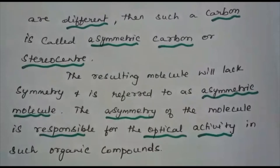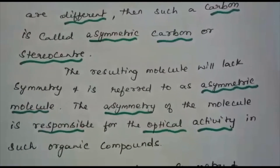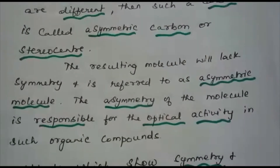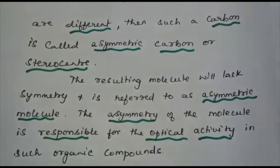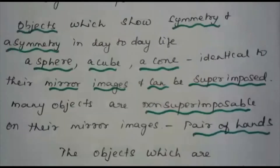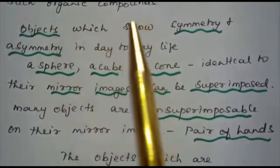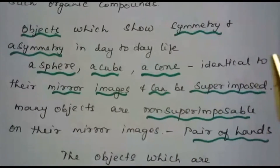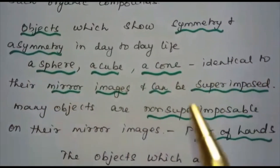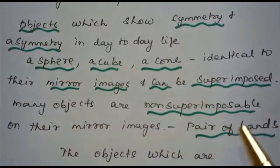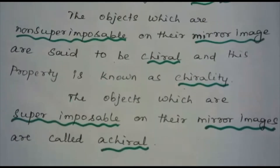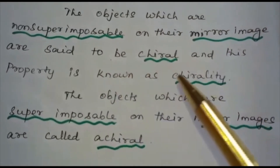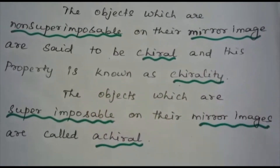If all four groups attached to the carbon atom are different, it is known as an asymmetric carbon or stereocenter. The resulting molecule lacks symmetry and its asymmetry is responsible for optical activity. Objects like a sphere, cube, and cone are identical to their mirror images and can be superimposed. Many objects are non-superimposable on their mirror images — for example, a pair of hands. Objects that are non-superimposable on their mirror image are said to be chiral, and this property is known as chirality. Objects that are superimposable on their mirror images are called achiral.